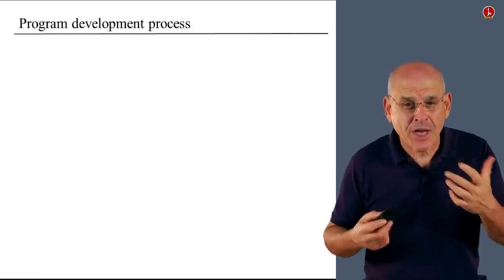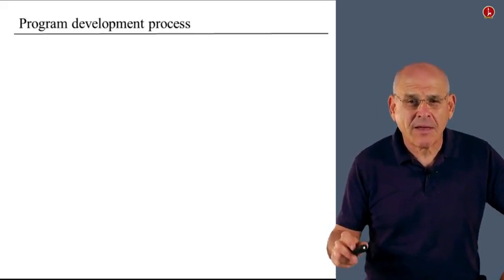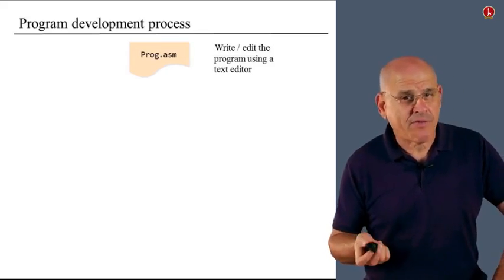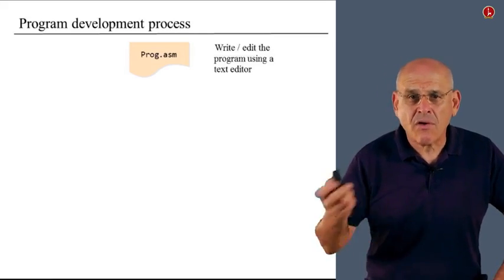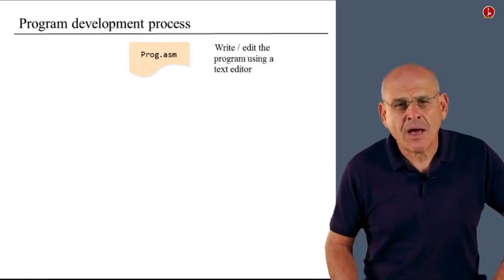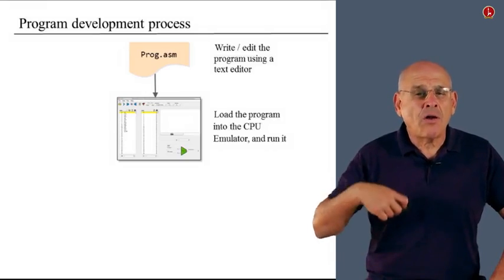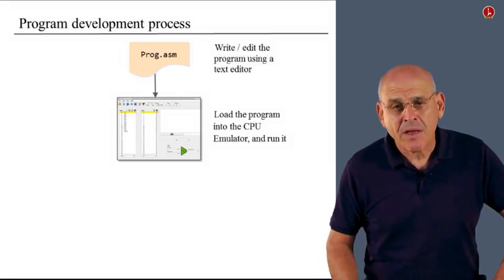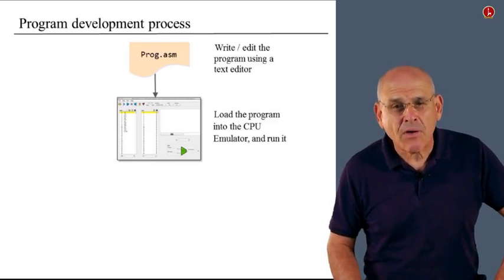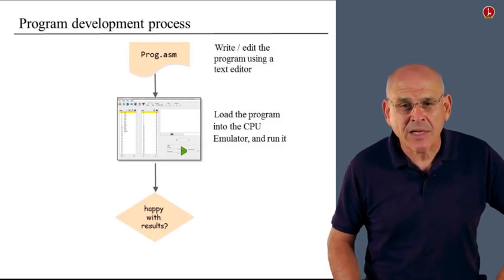I want to describe some general things about the overall program development process or cycle when you want to write programs in the hack machine language. First of all, your programs are going to reside within regular text files that you can write with any text editor. So you invoke your favorite text editor, you write the program, you save it using the extension ASM. And by convention, we give our programs names that begin with capital letters. Then you load this program as is into the CPU emulator. As I explained before, the CPU emulator has this very nice service. When you load the program, it automatically translates the program into binary code. So you can next run the program on the CPU emulator and then ask yourself if you're satisfied with the results. If so, you are done. You can submit the program to us.